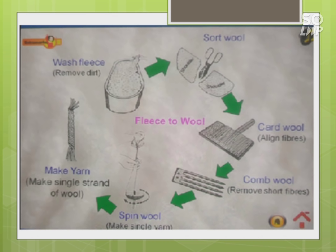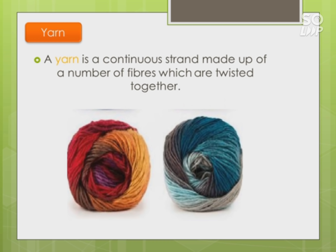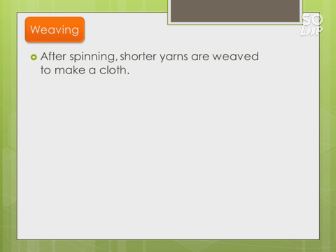To summarize how wool is obtained from the fleece: first the fleece is washed and dirt removed, second it is sorted out, third it is aligned and with the help of combing and spinning we ultimately make yarn - a single strand of wool. A yarn is a continuous strand made up of a number of fibers twisted together after spinning. Shorter yarns are woven to make cloth.